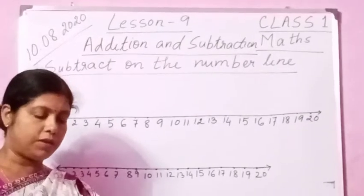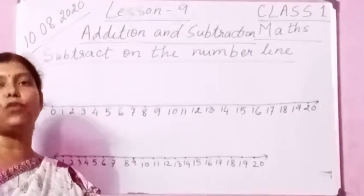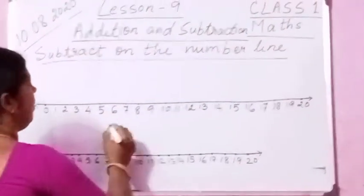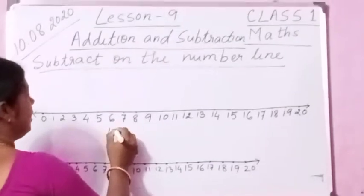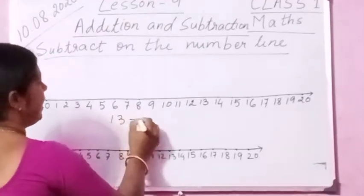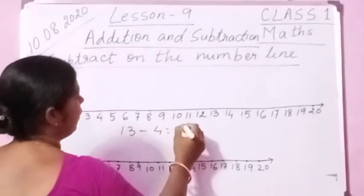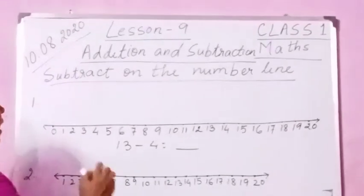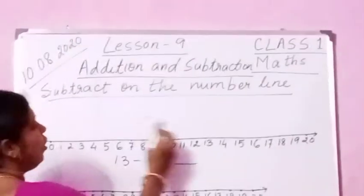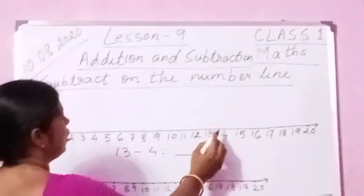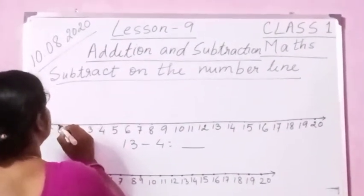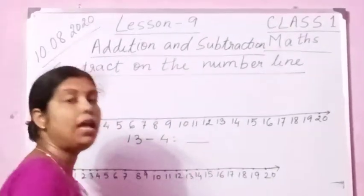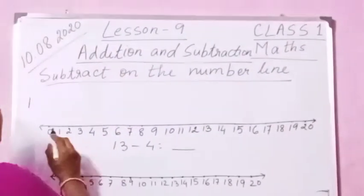So you see here 13 minus 4. First one, please see. It is given here 13 minus 4. We have to find out what is the number. Let us find out. From 0 you come to 13. See, this is the number line. I have made a number line up to 20.